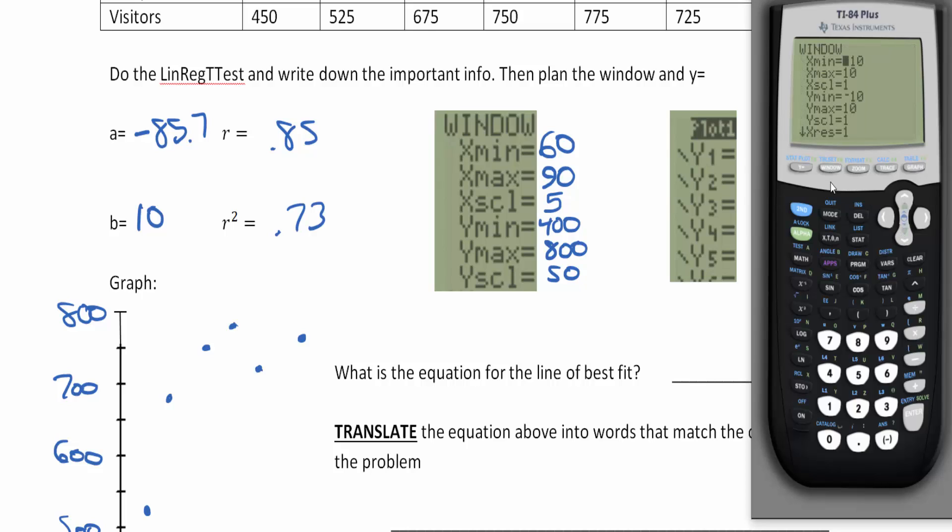Now what will happen is you'll see the dots. Click on the window key and change your window to what you typed in on your paper. So 60 and 90 going by fives, and then 400 and 800 going by 50s.